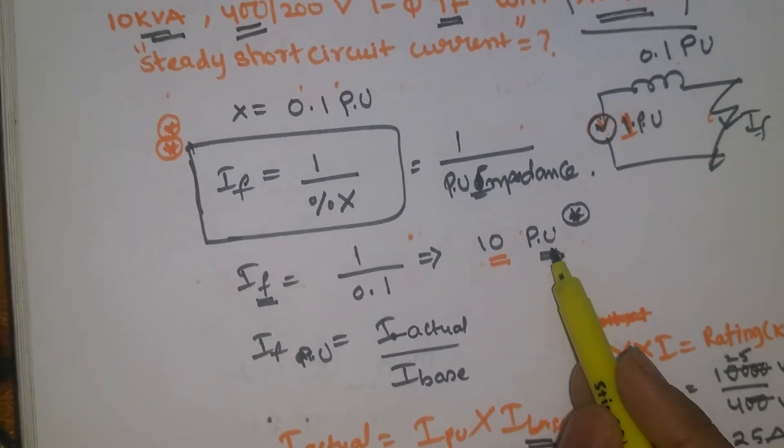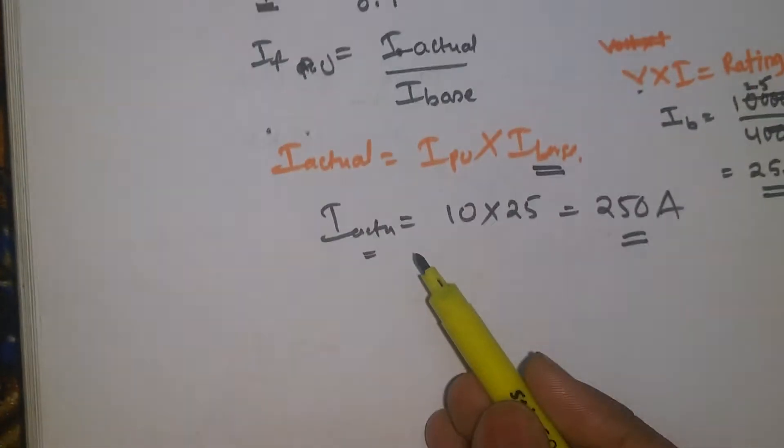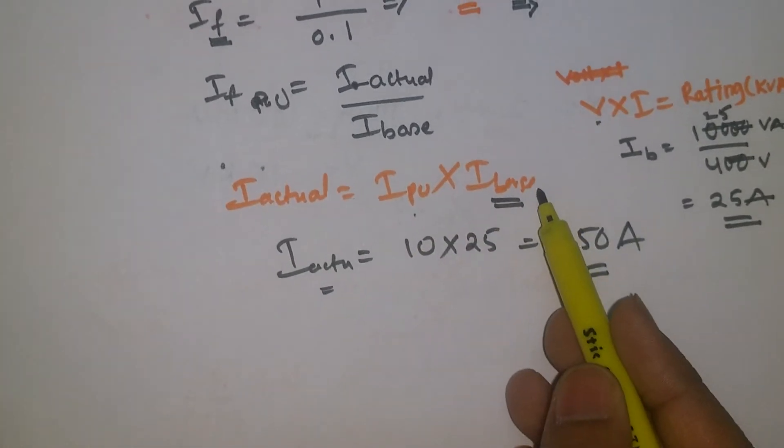Once you get the per unit value, you need to convert that into the actual value, that is per unit value into base value.